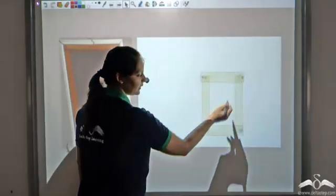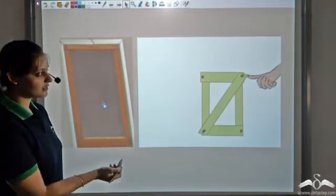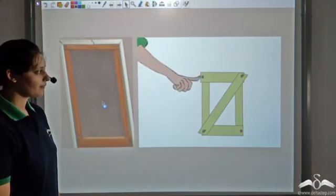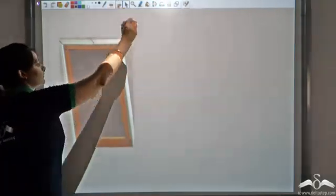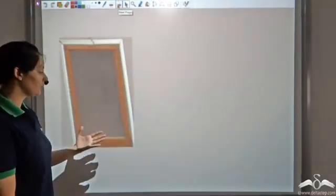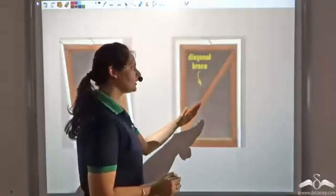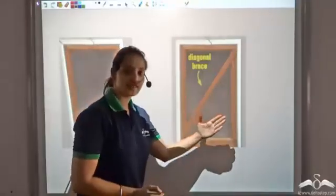But if I put a diagonal across it, then what do you see? It does not move. This becomes stable. So this door can be prevented from collapsing by putting a diagonal brace. Why does this diagonal brace make it more stable? Why is this unstable whereas this is stable?